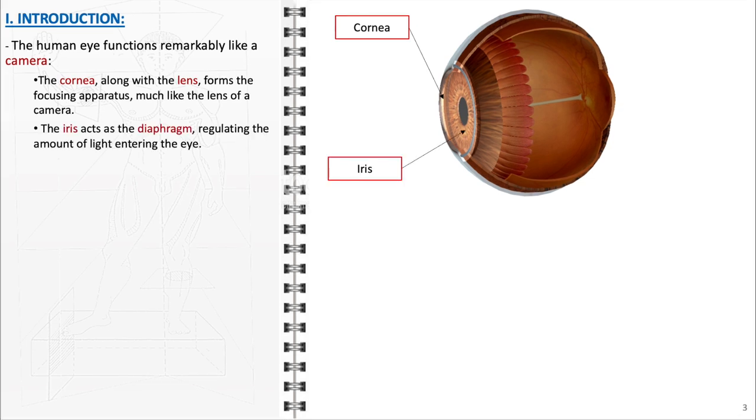Next, the role of the iris is likened to that of a camera's diaphragm. The iris adjusts the size of the pupil, controlling the amount of light that enters the eye, much like how a camera's diaphragm controls light exposure.